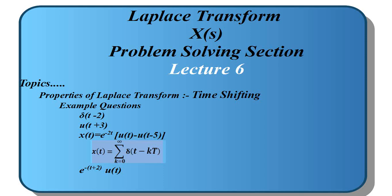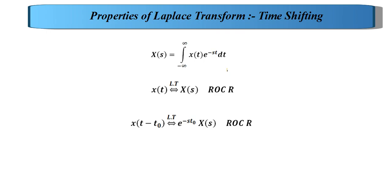In lecture 6 we will discuss the time shifting property of Laplace transform. First, we will explain what is meant by the time shifting property. The general equation for Laplace transform is X(s) = integral from minus infinity to infinity of x(t) e^(-st) dt. This is the bilateral Laplace transform equation. Assume there is a signal x(t) whose transform is X(s) and the ROC is R.